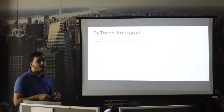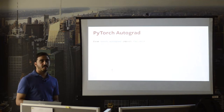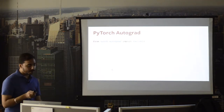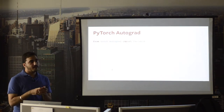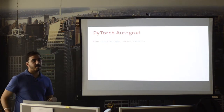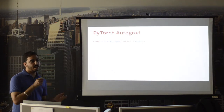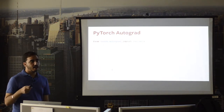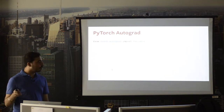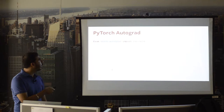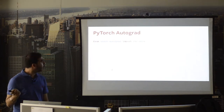Now for supporting automatic differentiation and calculation of gradients, you need to wrap your tensor into something known as a Variable. So the hierarchy is: NumPy array → tensor → Variable. The Variable module resides inside torch.autograd.